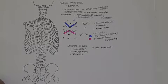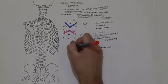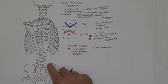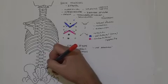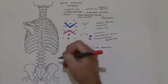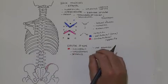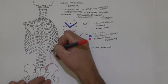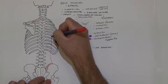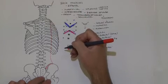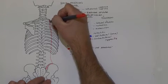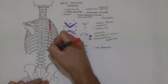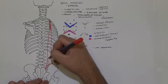Let's draw iliocostalis in red. Ilio refers to the ilium, and costalis means of the ribs. So the iliocostalis originates from the posterior aspect of the iliac crest and parts of the thoracolumbar fascia. Its fibers then travel upward and attach onto the ribs — all 12 ribs, all the way to the top. There are upper and lower sections, but essentially it runs all the way from the ilium to the ribs.